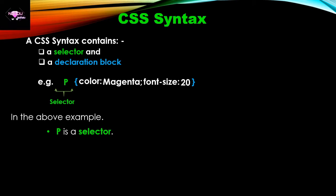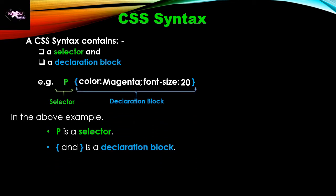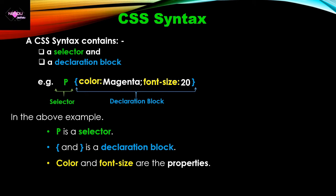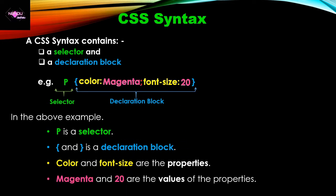There are multiple types of selectors, which we will discuss in our next video. The 'p' here is the selector, and the contents placed within the curly brackets form the declaration block. Within this declaration block, 'color' and 'font-size' are properties used for selector 'p', and 'magenta' and '20' are their respective values.